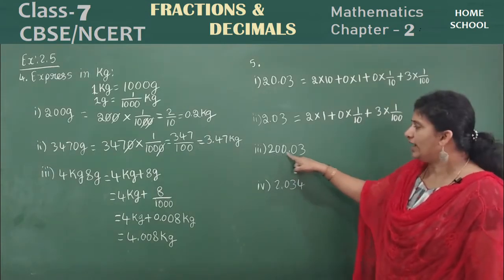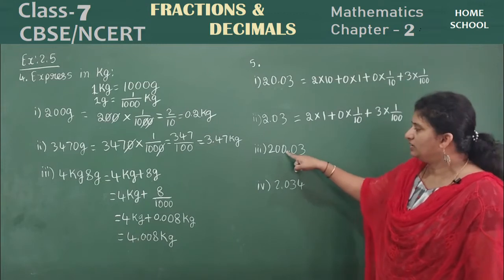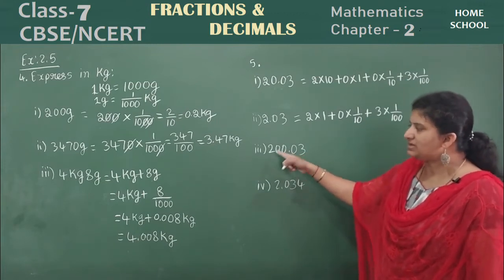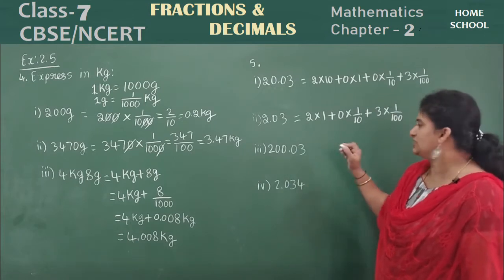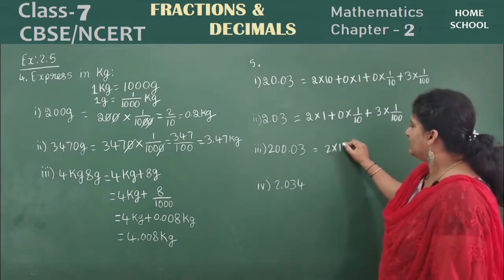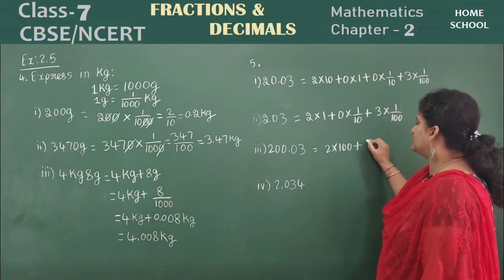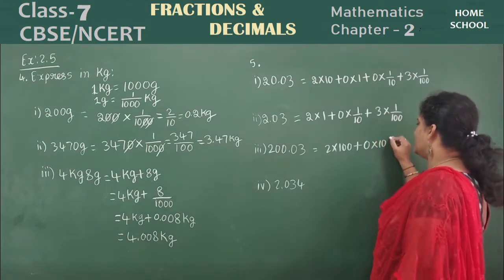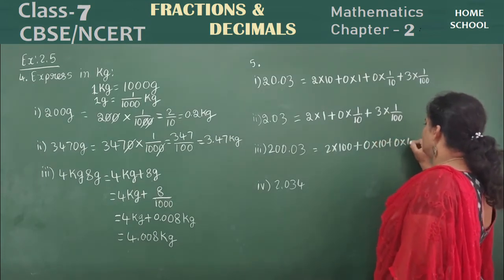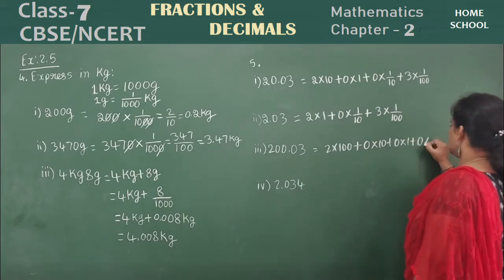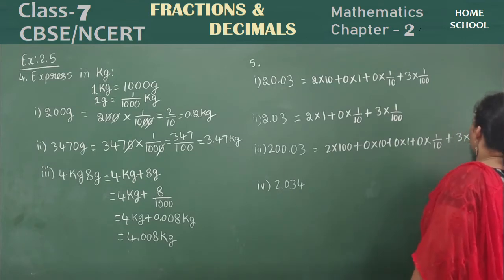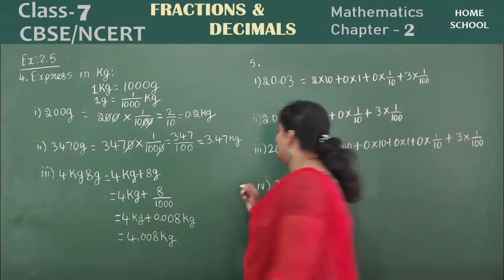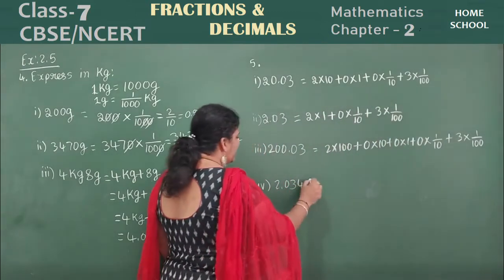This is 200.03. Ones, tens, hundreds, tenth, hundredth position. So look here. 2 is in hundreds place plus 0 is in tens place plus 0 is in ones place plus 0 is in tenth place plus 3 is in hundredth place. That means 3 into 1 by 100.